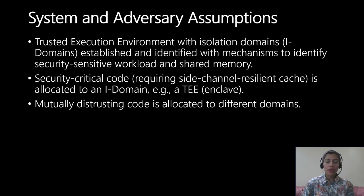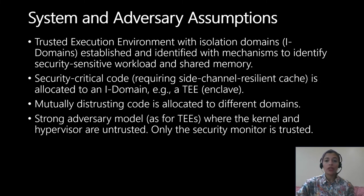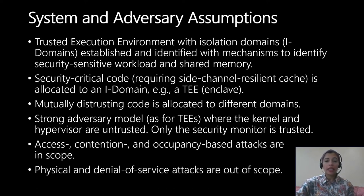For chunked cache, we assume a computing system with a typical TEE security architecture where security-critical code is isolated into uniquely identified components called isolation domains, and mutually distrusting code is allocated to different domains. In line with TEEs, we assume a strong adversary where the highest-privileged kernel or hypervisor is untrusted and can mount these attacks; only the security monitor of the TEE is trusted. We mitigate access-based, contention-based, and cache-occupancy-based attacks, while denial-of-service and physical attacks are kept out of scope.